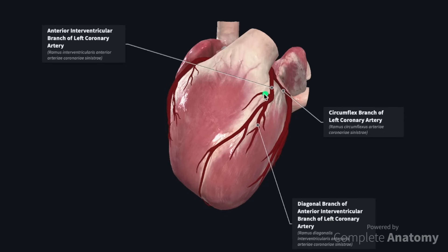One of which is the left conus artery, which will anastomose with the right coronary artery in some, and in approximately 50% of individuals the large diagonal branch will arise to supply the anterior surface of the heart.